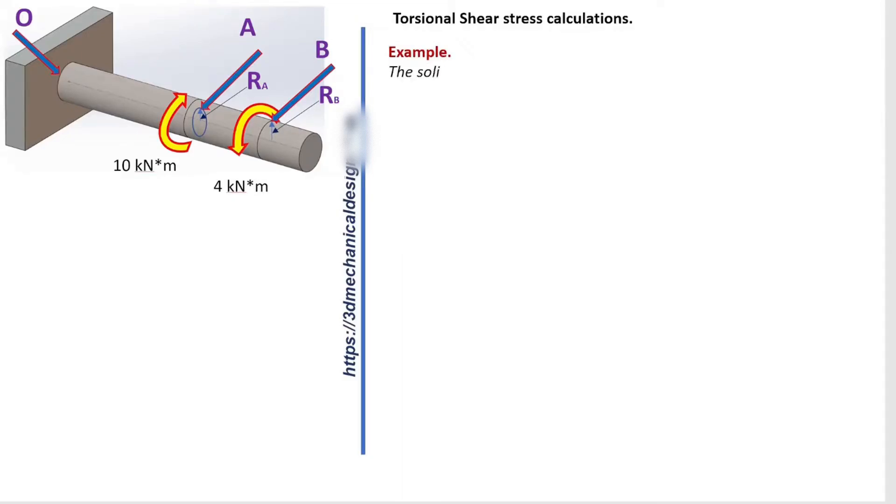Example: The solid shaft is fixed on the support at point O and subjected to the torsional loadings. Zone point A: 10 kN per meter, clockwise.